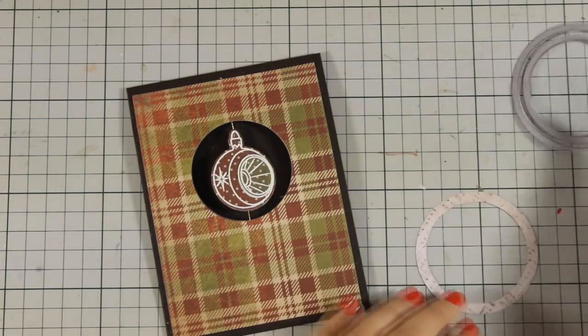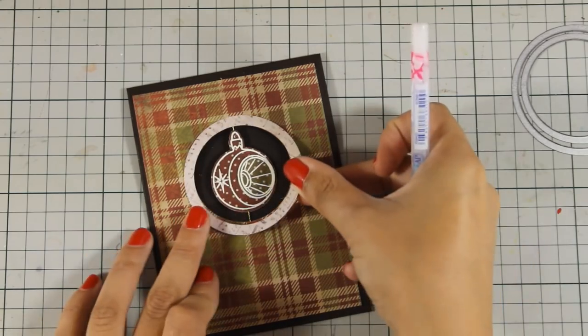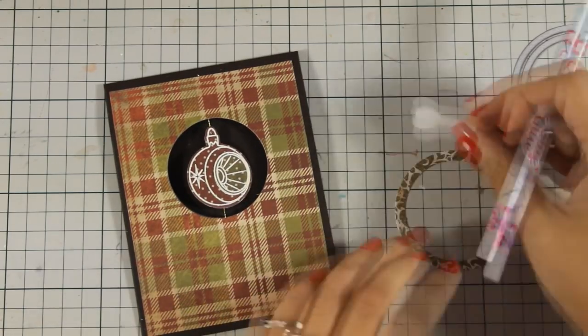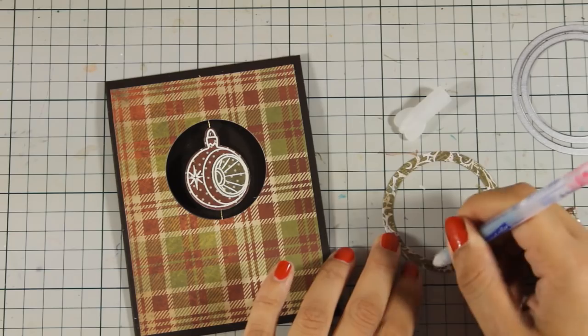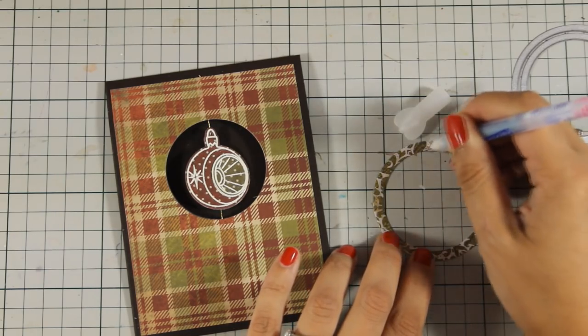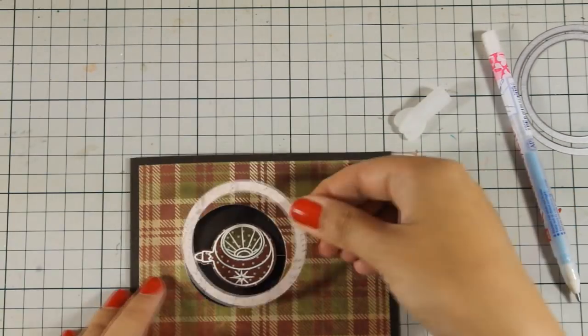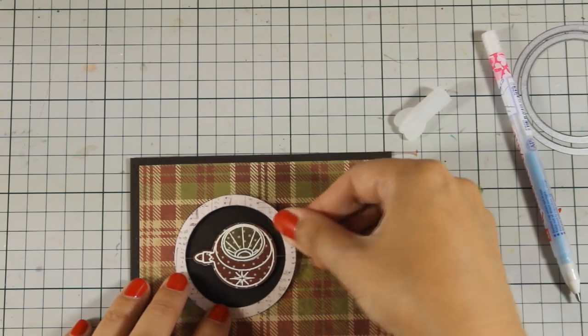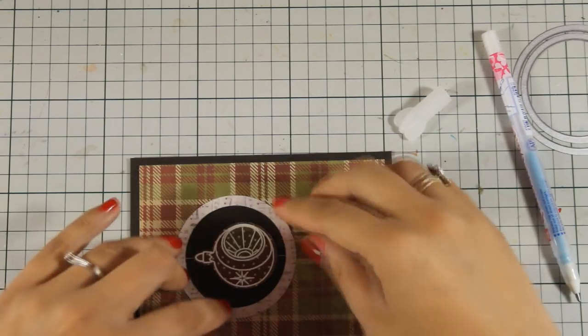I have used those dies one inside the other to create this ring. This comes from the same pattern paper collection as the rest of the papers and I am going to stick that around the hole that I have on my card. I think that this is going to help that ornament pop even more against the background.